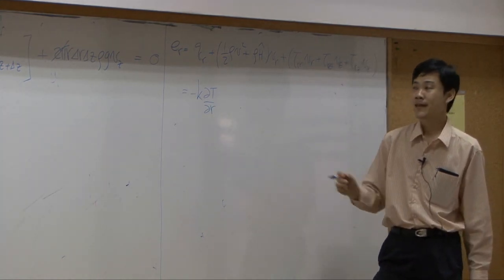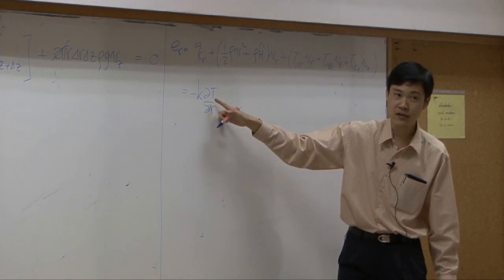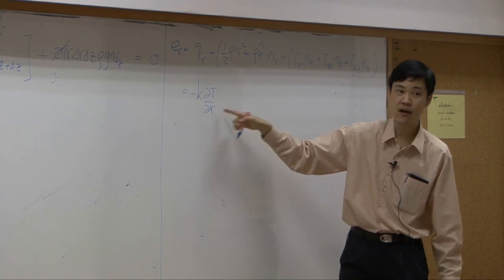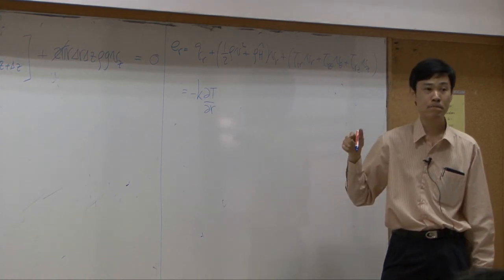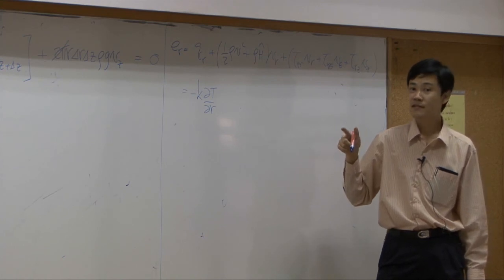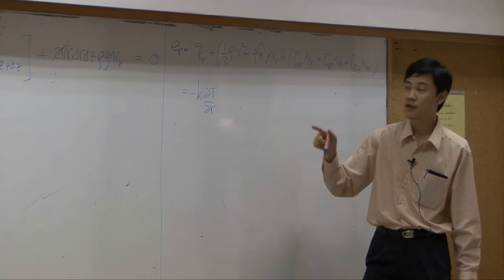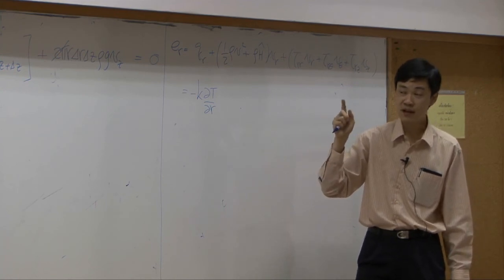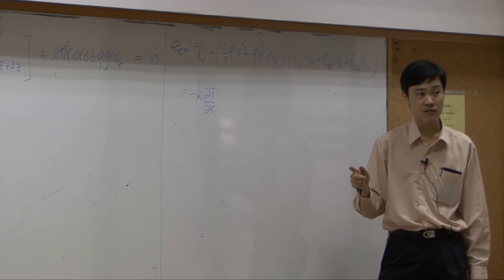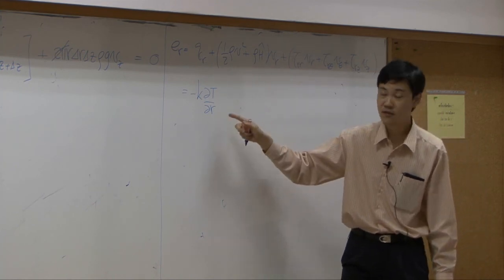All right? Can I write it down as total differentiation here? Total differential of t by dr. Can I do that? In this case, no. Because we know from the picture, temperature does change with respect to r and change with respect to z as well. So it must be kept as partial differentiation.